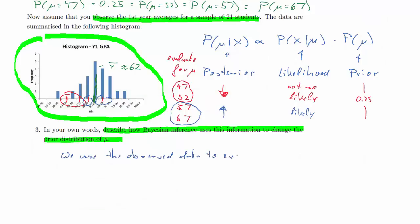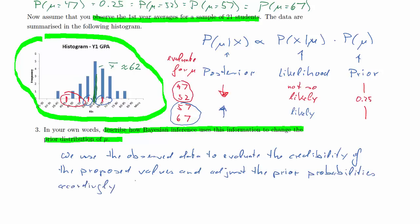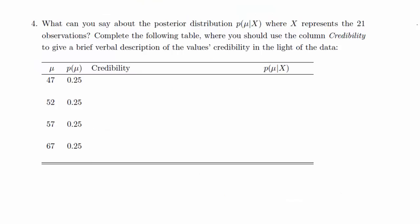How do we say that in words? What we do? Well, we use the observed data to evaluate the credibility of the proposed values for mu, the four possible values. And then we will adjust the prior probabilities accordingly. Meaning that we will increase it or we will get an increased posterior for the values of mu for which the data were more likely.